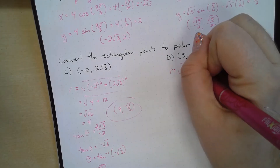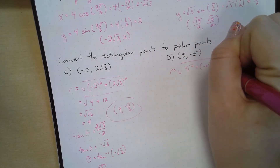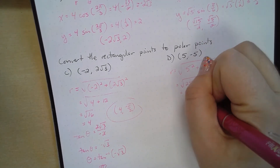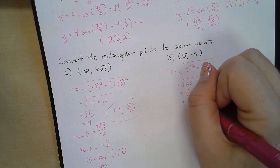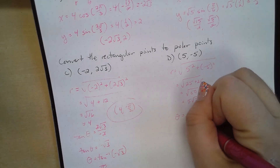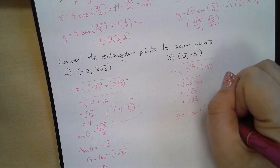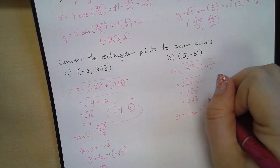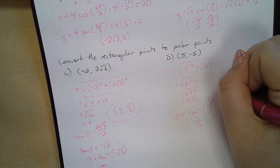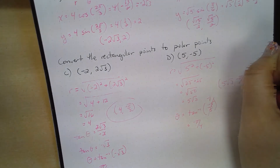Let's do another one. Here r is going to be equal to the square root of 5² plus (−5)², which equals the square root of 25 plus 25, which equals √50, which equals 5√2. Theta is going to be arctangent of −5/5, which equals arctangent of −1, which is −π/4. So our polar coordinate is (5√2, −π/4).